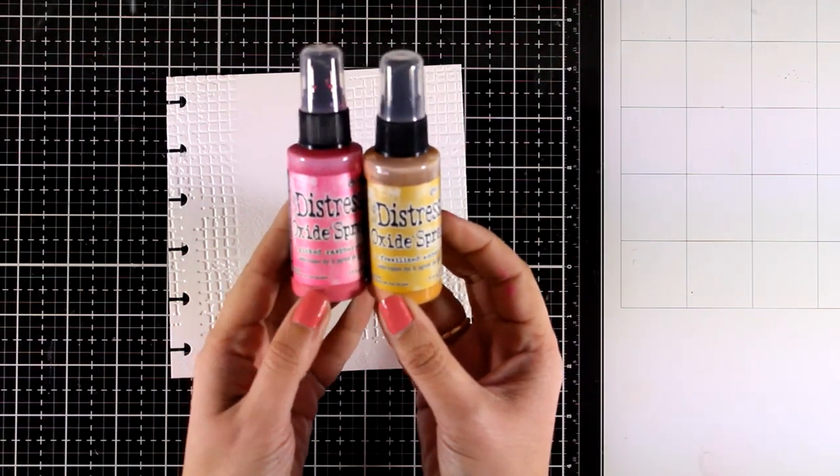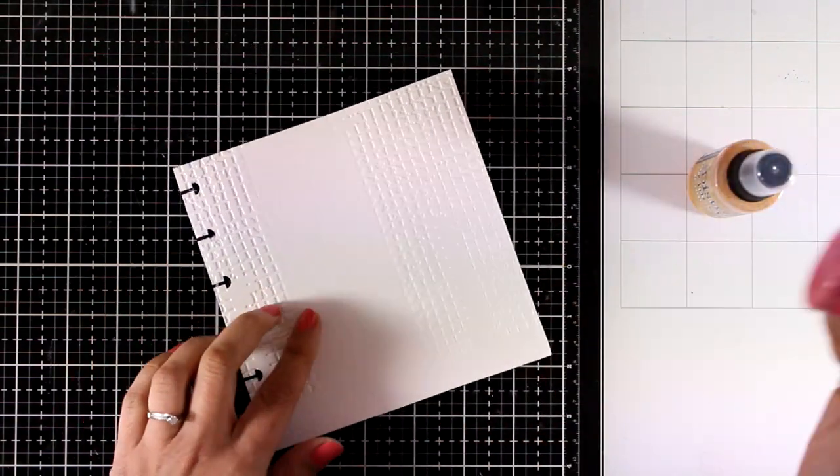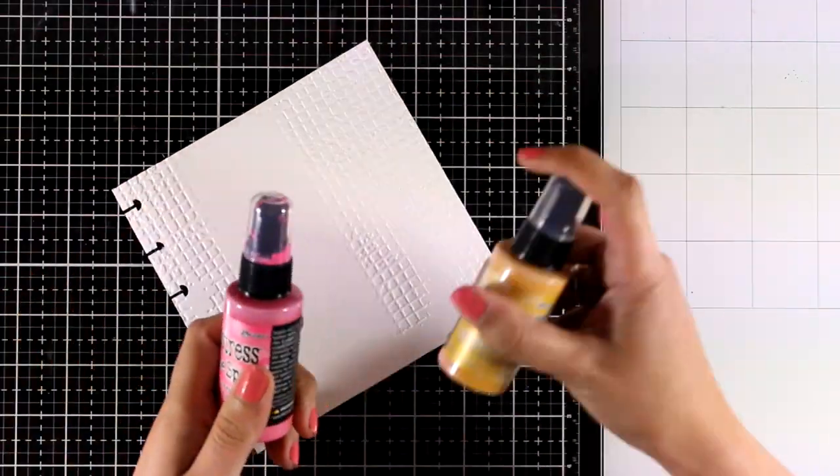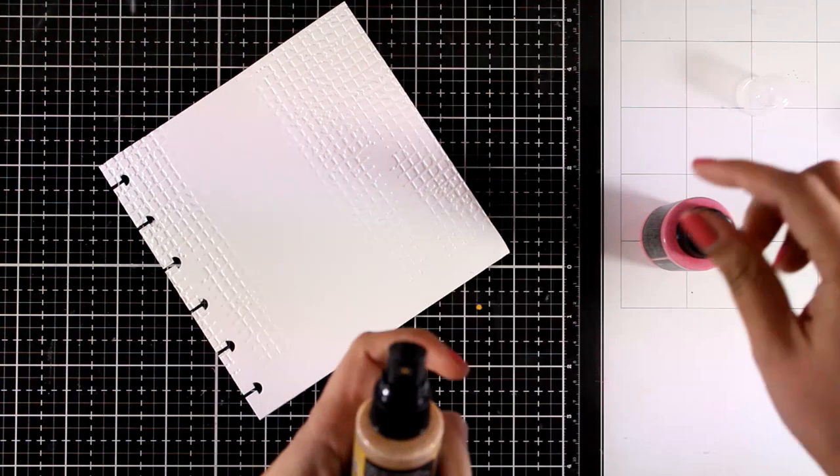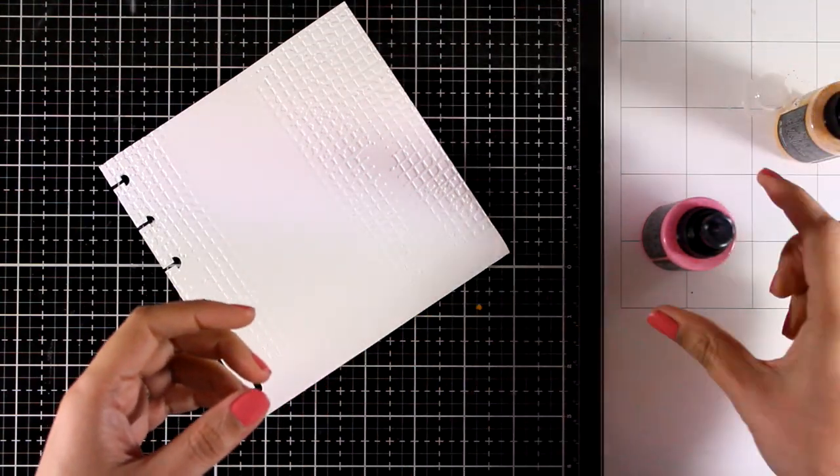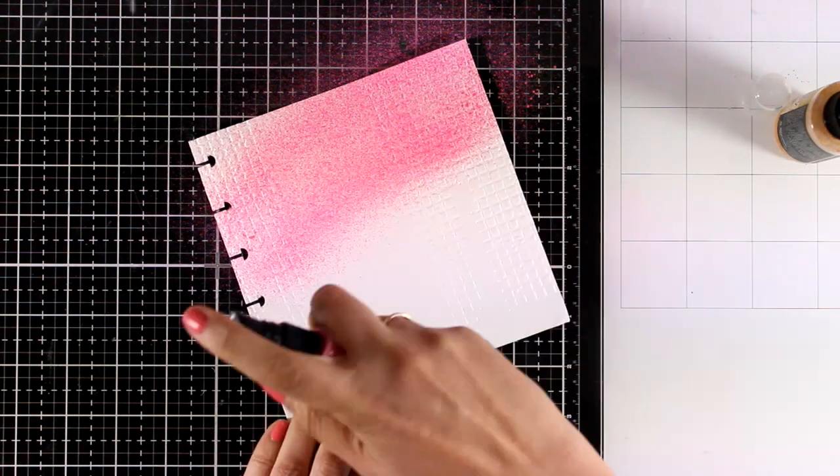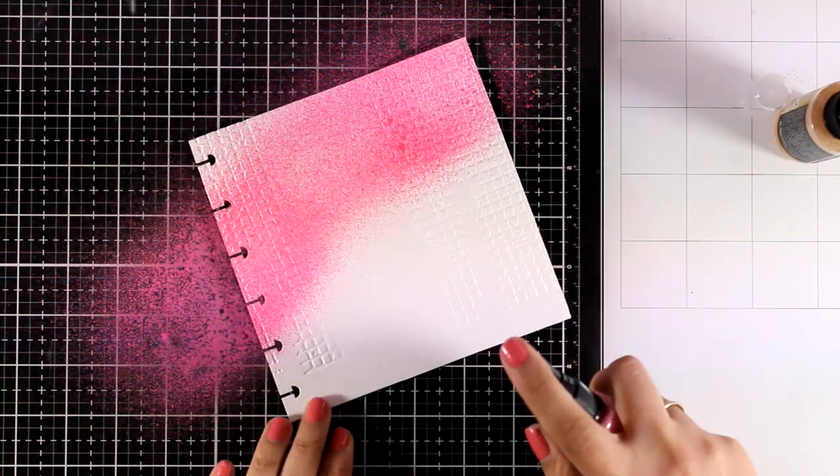Now for adding color to my page, I will be working with my Distress Oxide sprays. You need to make sure that you shake them really well before you start applying your color. The colors that I'm using here are Picked Raspberry and Fossilized Amber.